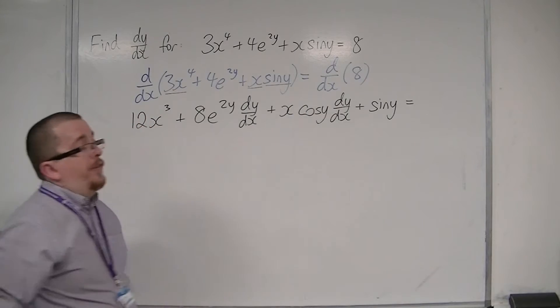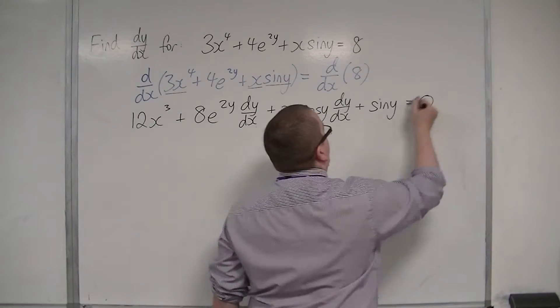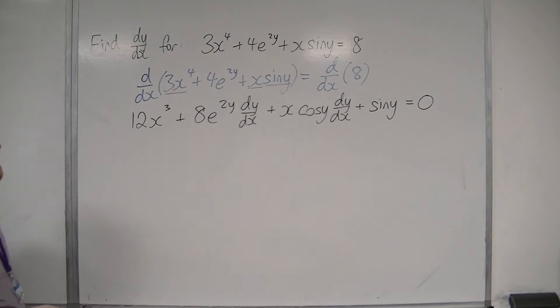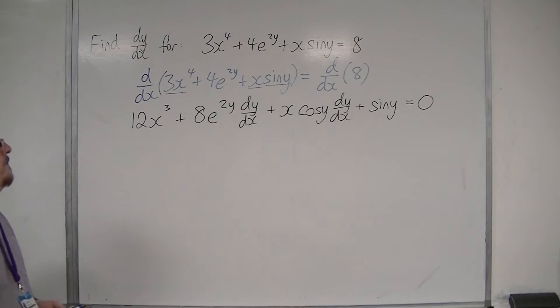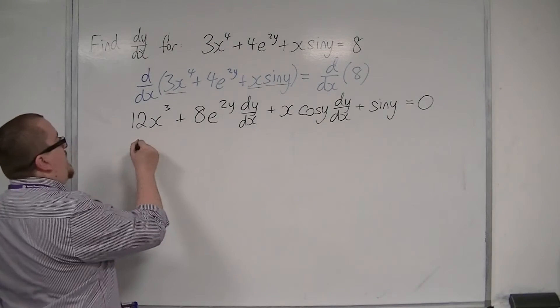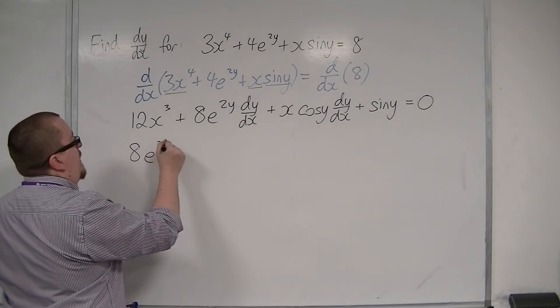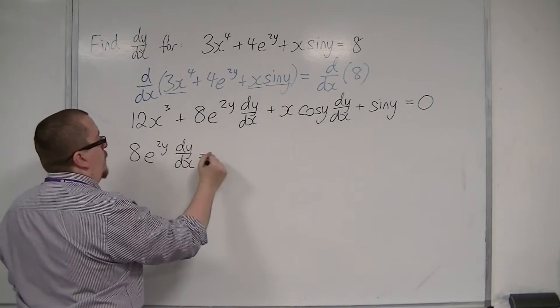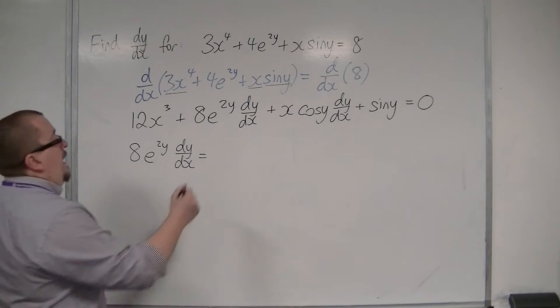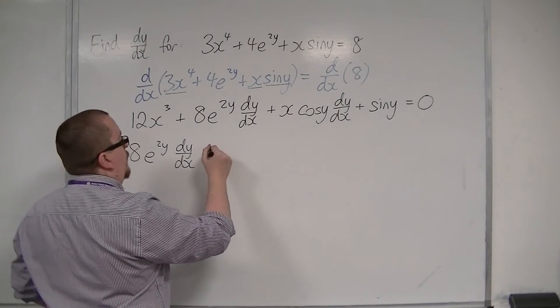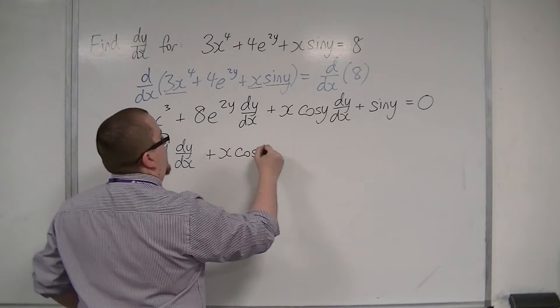Now the right-hand side differentiates 8 with respect to x, so that's 0. So now what I want to do is I want to rearrange this to get dy by dx equals. So I'm going to leave anything on the left-hand side of the equation that has a dy by dx in it, and shift everything else onto the right-hand side.